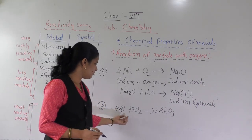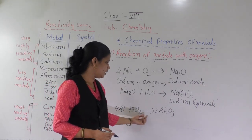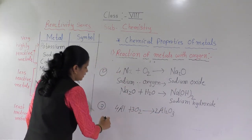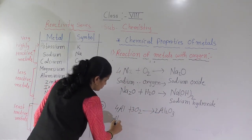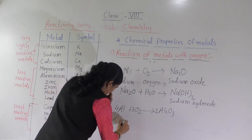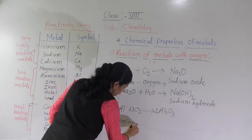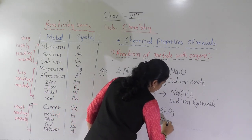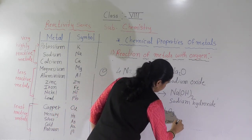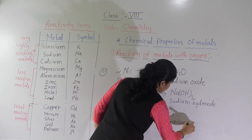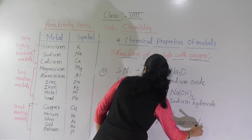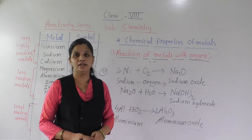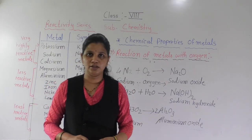One more example — aluminium reacts with oxygen to give aluminium oxide (Al2O3). Write the names here so you understand the pattern: aluminium plus oxygen gives aluminium oxide. The next chemical properties we will learn in the next lecture. Thank you.